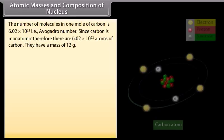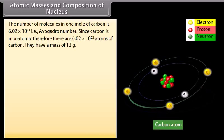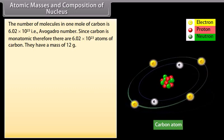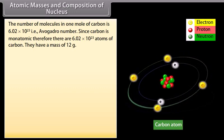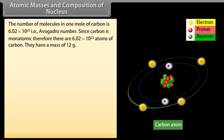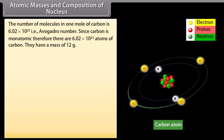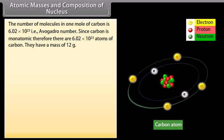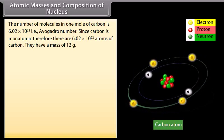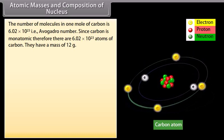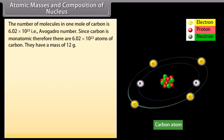Atomic masses and composition of nucleus. The number of molecules in one mole of carbon is 6.02 into 10 raised to the power 23, that is Avogadro number. Since carbon is monoatomic, therefore there are 6.02 into 10 raised to the power of 23 atoms of carbon. They have a mass of 12 gram.